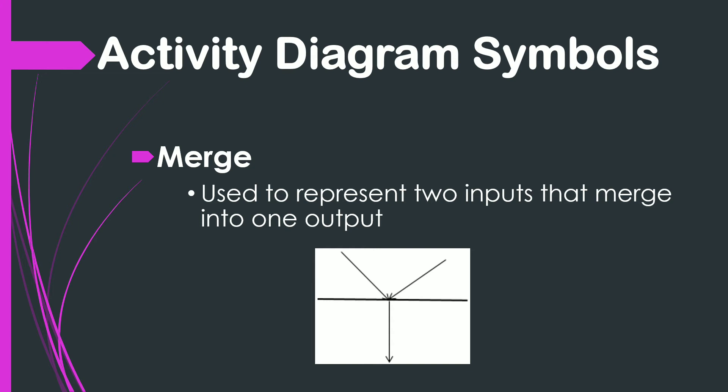The next one is the merge. It represents two inputs that merge into one output. In merging, there is more than one input, but only one output is obtained.